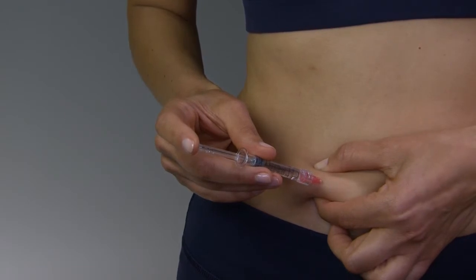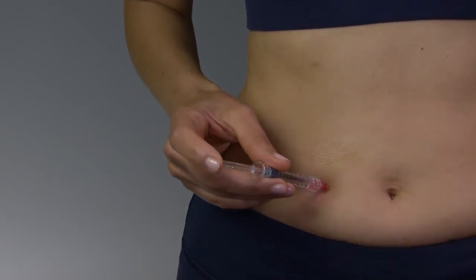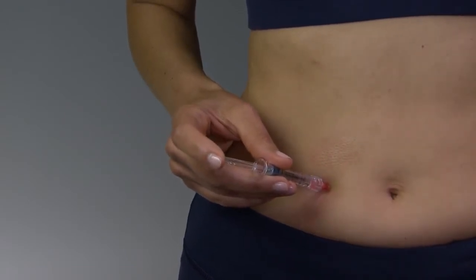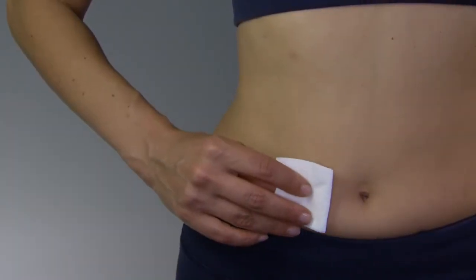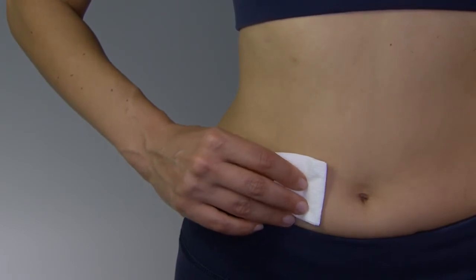Once the needle is inserted, you may release the pinched skin and push the plunger in a slow, steady motion until all the medicine is injected. Gently withdraw the needle and apply pressure to the injection site with a sterile gauze pad.